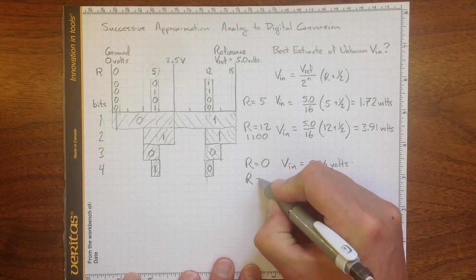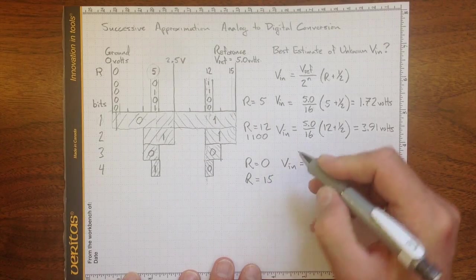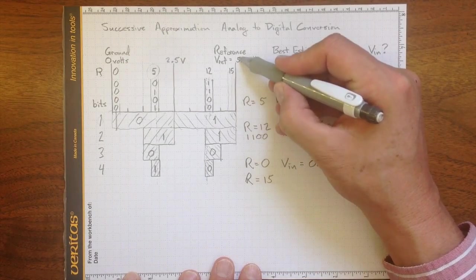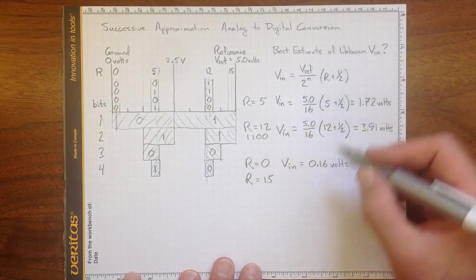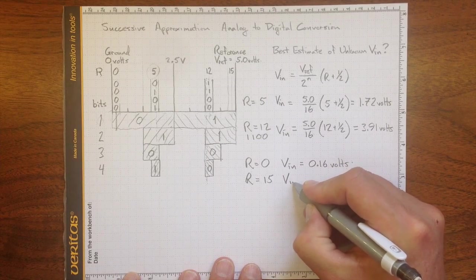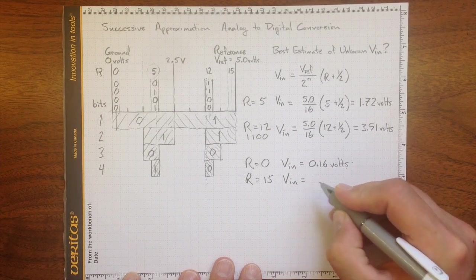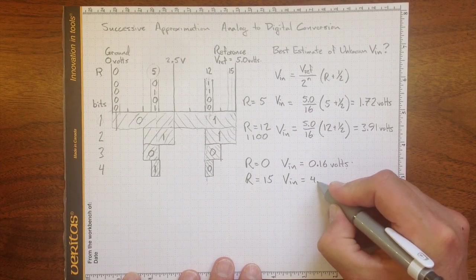Likewise, if R was equal to 15, that means we're in this last region here, not quite up to 5 volts. We might have 5 volts, we might have less. And when we plug it into the equation, we get Vn equal to 4.84 volts.